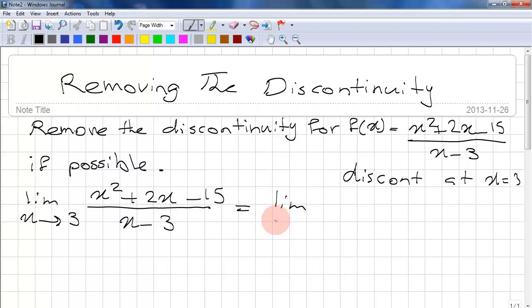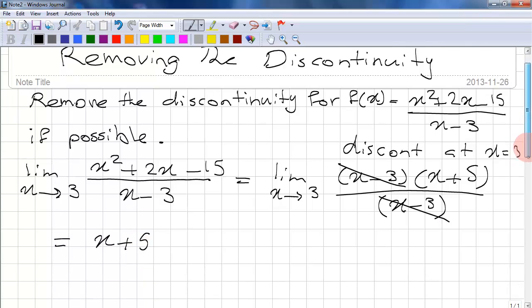X minus 3 times x plus 5 over x minus 3. We have a common factor in the numerator and denominator, so we can cancel these two out. It's equal to x plus 5.